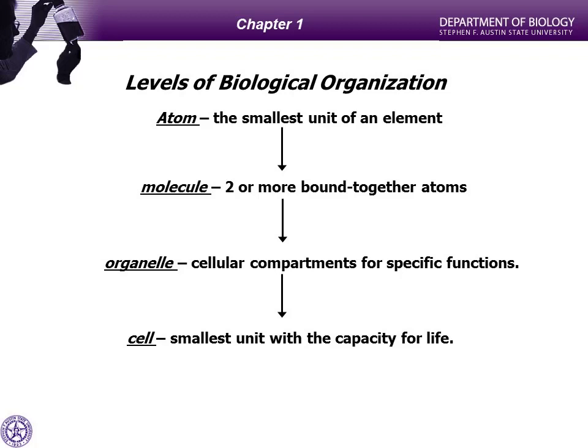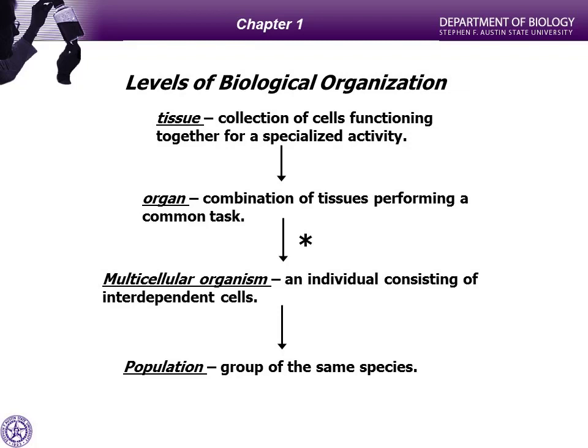It's only when we package these organelles together into one singular membrane-bound package called a cell that we say, by biological definition, we have something that's living. We've started with atoms, packaged them into molecules, made organelles, and packaged those into a living functional cell. Now let's package some cells together — a collection of cells that do one thing is called a tissue. We haven't gotten to the heart yet; here we're just talking about tissues. There are four kinds: epithelial, muscular, nervous, and connective tissue.